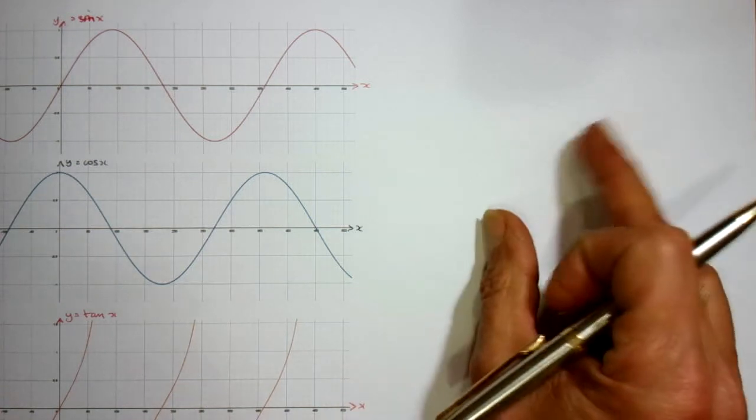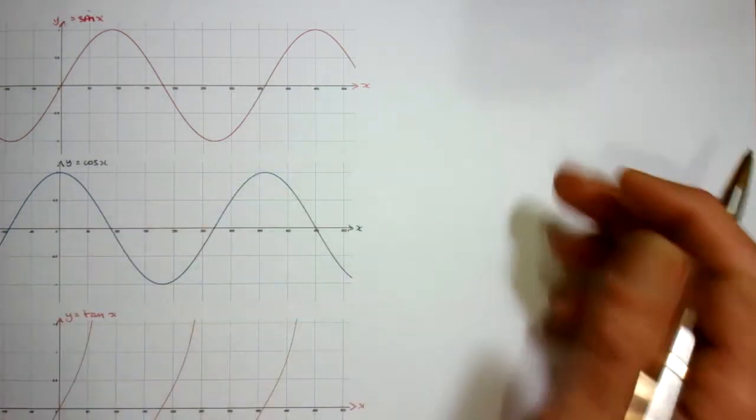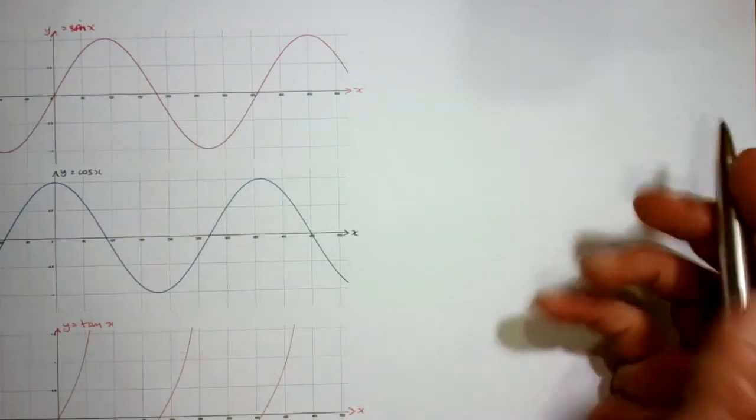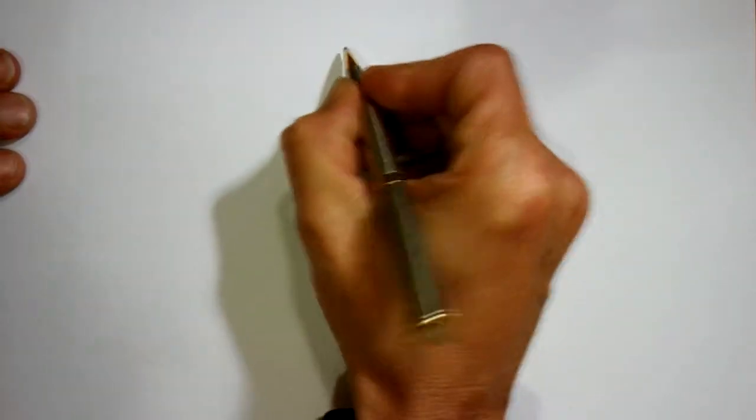And I said there's some values we need to know from those, as well as the graph. Thinking about those graphs, the table values that we need are like this.